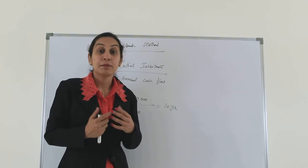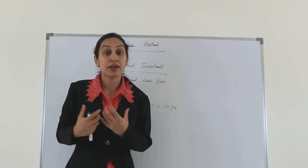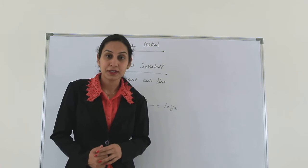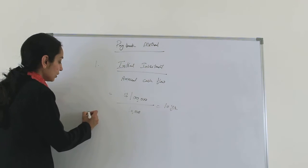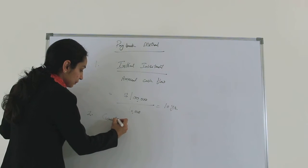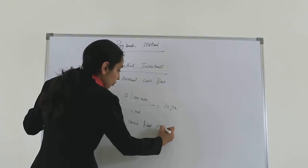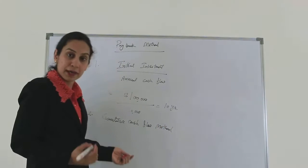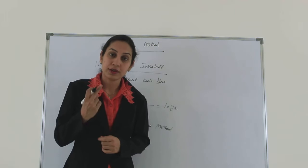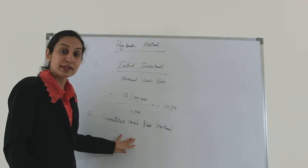But practically, it may or may not be possible. Generally, you cannot expect exactly the same cash flow every year. In that case, we cannot use this formula. Rather, we will use another method for uneven cash flows, called the cumulative cash flow method. This cumulative method is part of payback period — it's just that in payback there are two types: one for equal cash flow, and another for uneven cash flow.